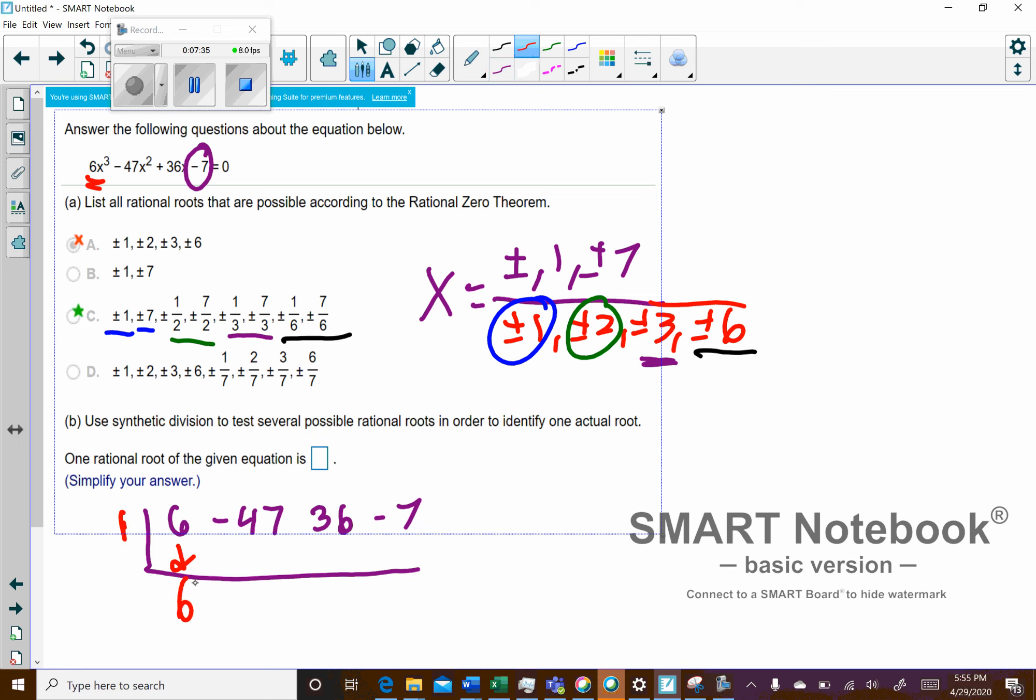So I drop down the 6. 6 times 1 is 6. This adds up to negative 41. Negative 41 times 1 is negative 41. That adds up to 5. I don't think this one's going to work. That doesn't work. By the way, that should be negative 5, but it won't actually make a difference because you're getting negative 12 as a remainder.